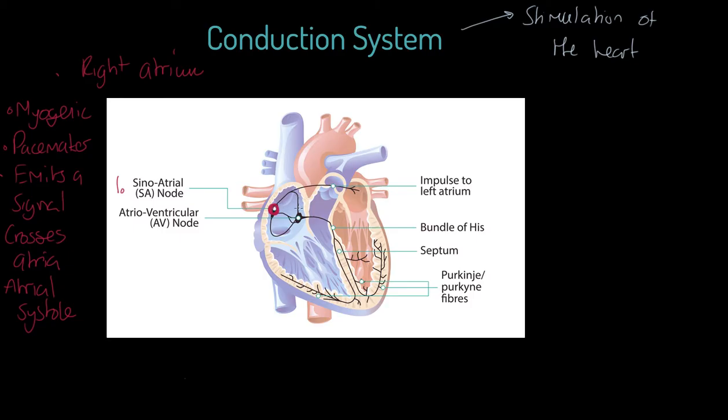So the SA node emits a signal, and there goes that signal across the atria. It's also going around here and around here. Notice that effectively what it's doing is contracting the atria, so we get contraction here and here. What do we get? We get atrial systole, the forcing of blood down into the ventricles because the atria themselves are contracting, they're going through a phase.